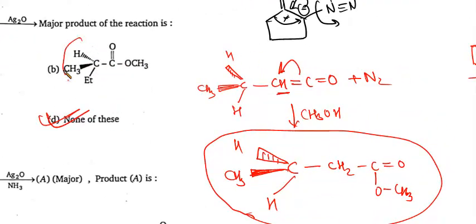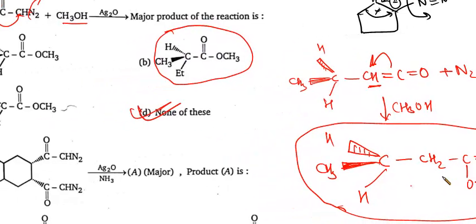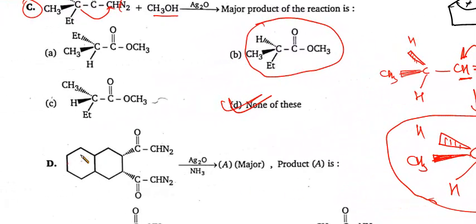See in which option it is given — one carbon is less here. The correct answer is D. Match it — it is exactly the same but has fewer carbons.